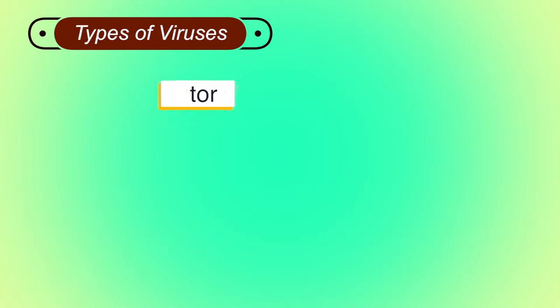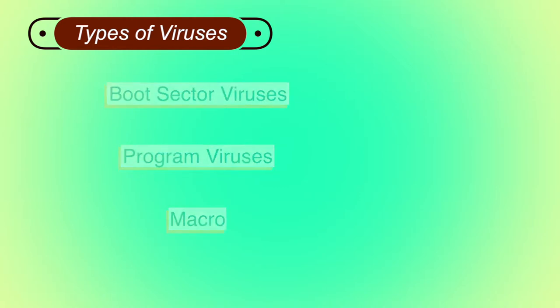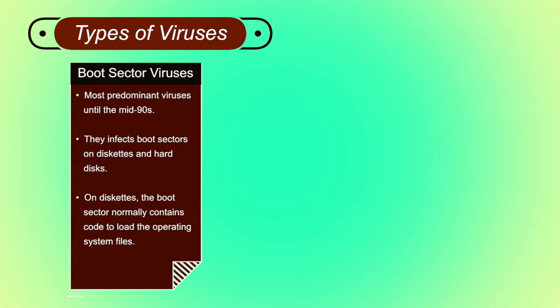There are 3 different types of viruses: boot sector virus, program virus, and macro virus. Boot sector viruses were the most predominant viruses until the mid-90s. They infect boot sectors on disk kits and hard disks. On disk kits, the boot sector normally contains code to load the operating system files.